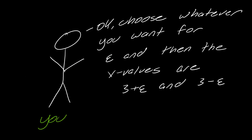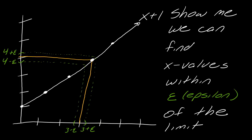So you tell me: choose whatever you want for epsilon, and then the x values are going to be 3 plus epsilon and 3 minus epsilon. This is basically the idea behind the precise definition of a limit — we want to have an assurance that I can get as close to the limit as I want, zero in on this as tightly as I want, and I will always find corresponding x values that will get me around that limit. It's fine if at one specific point the function does not exist; all the other points around it are going to exist, and that's what tells us we have the right limit.